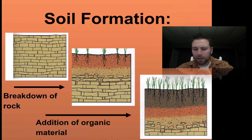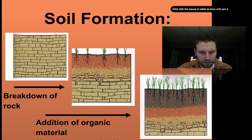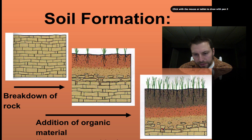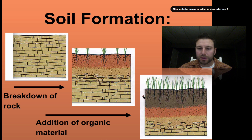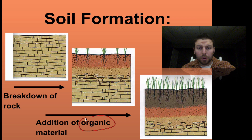Soil formation starts with the breakdown of rock, generally bedrock. Through chemical or physical weathering processes the rock breaks down, and we can see that right here. As it breaks down, the sediments pile up. As these sediments accumulate, organic material and plants grow on top. As the plants grow and possibly die, they contribute more organic material to the top — organic meaning once-living organisms or material.